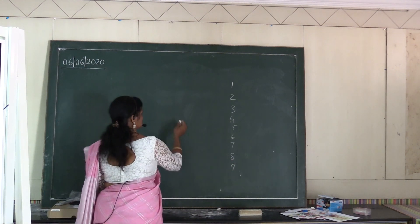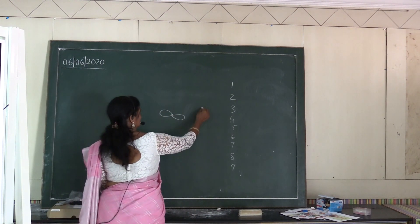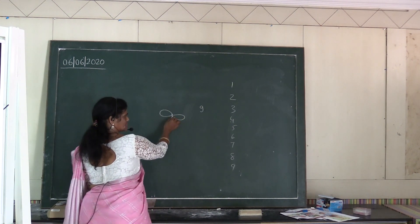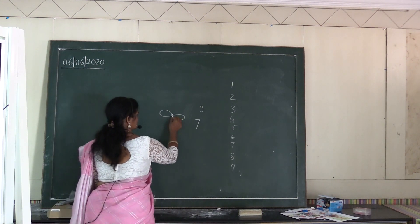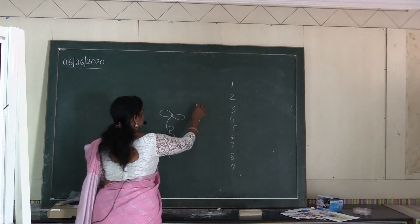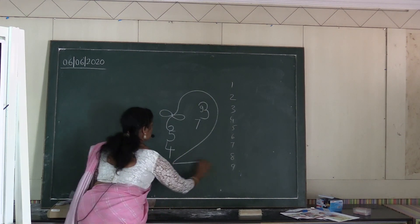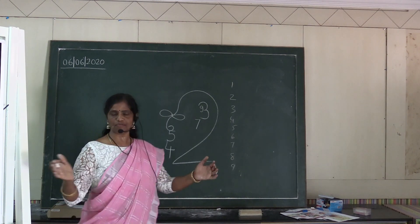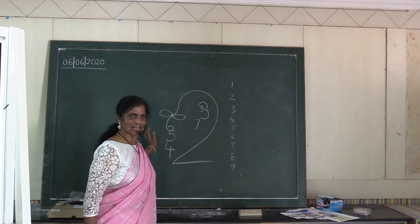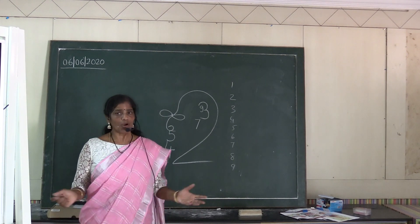This is 8. I am drawing sleeping 8. This is 9. After 9: 8, 7, 6, 5, 4, 3, 2, 1. Can anybody find out what it is? Great, you are correct. And this is our face.